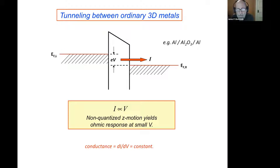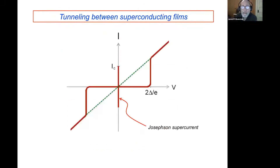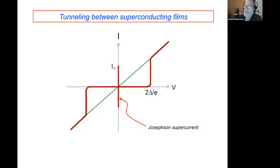Something to think about: even if the barrier is completely smooth in the direction perpendicular to the page, so that the component of the electron's momentum parallel to the layer is conserved on tunneling, there's still momentum in the z-direction for three-dimensional metals, and that momentum is not conserved. This leads to the rather mundane I-V characteristic where current is proportional to voltage alone.